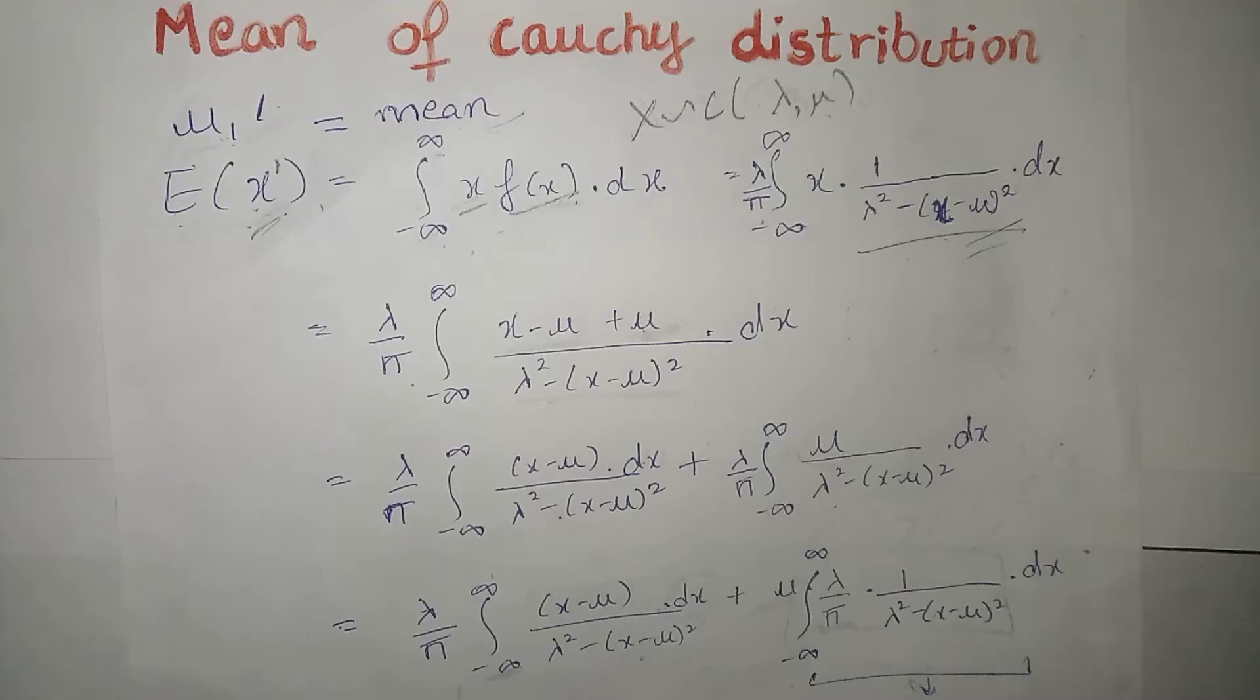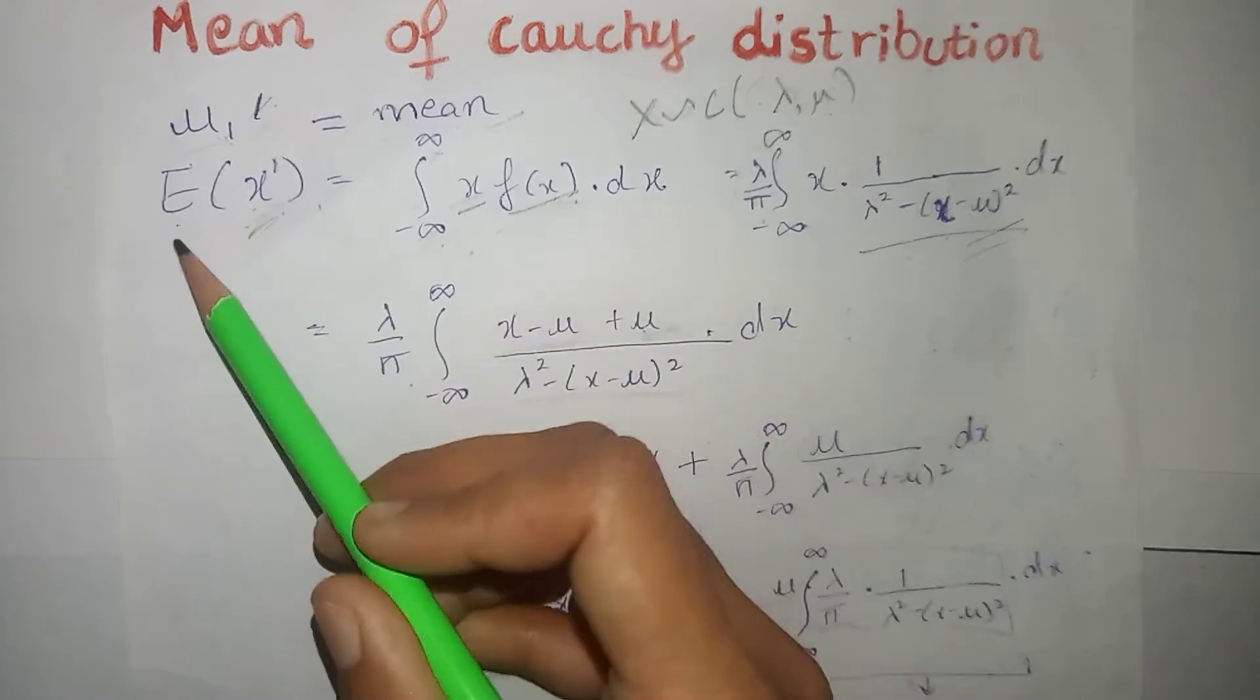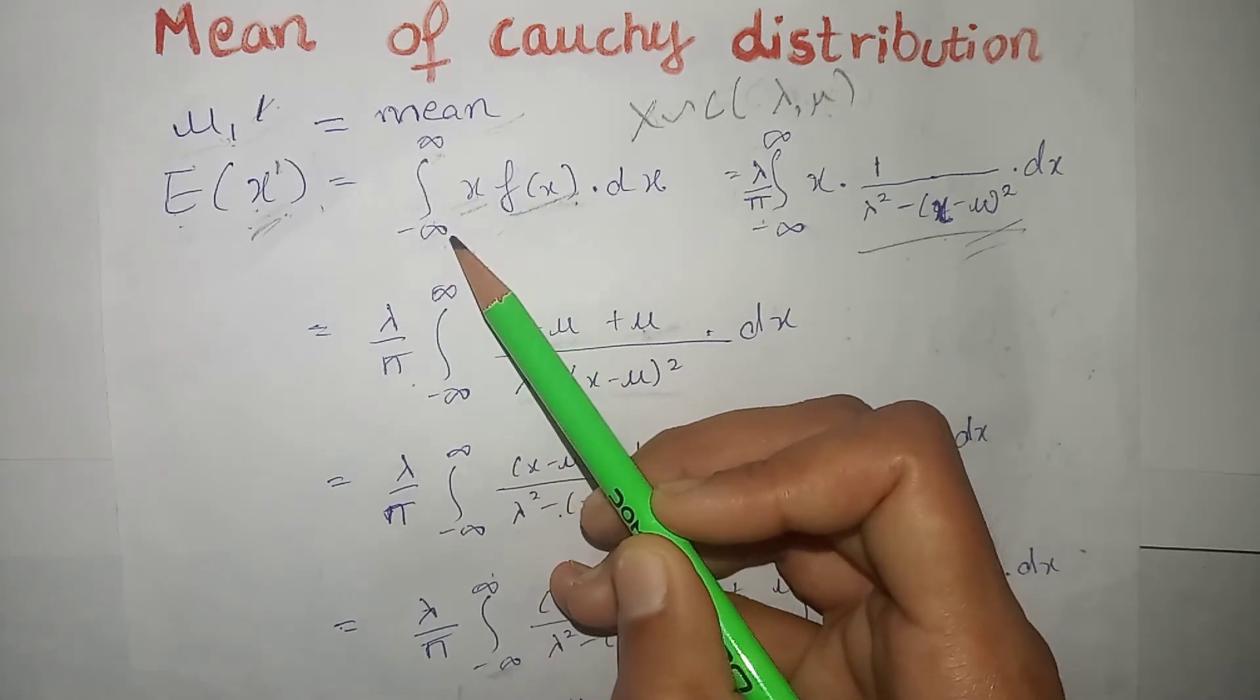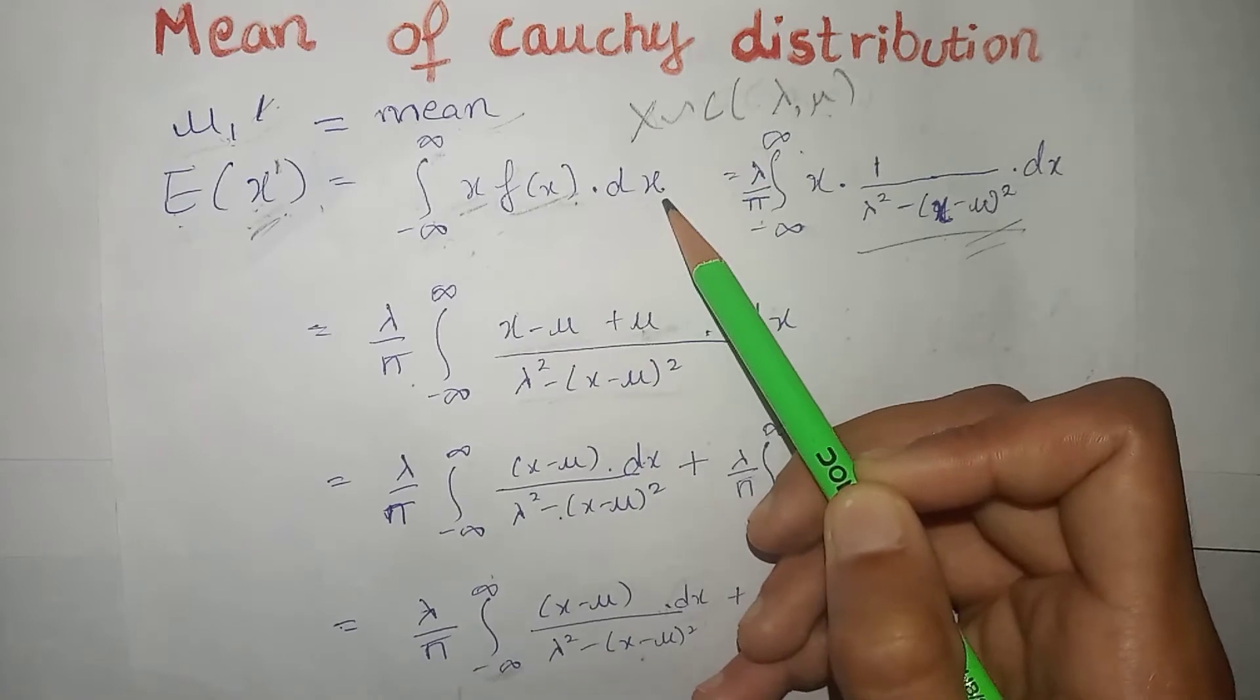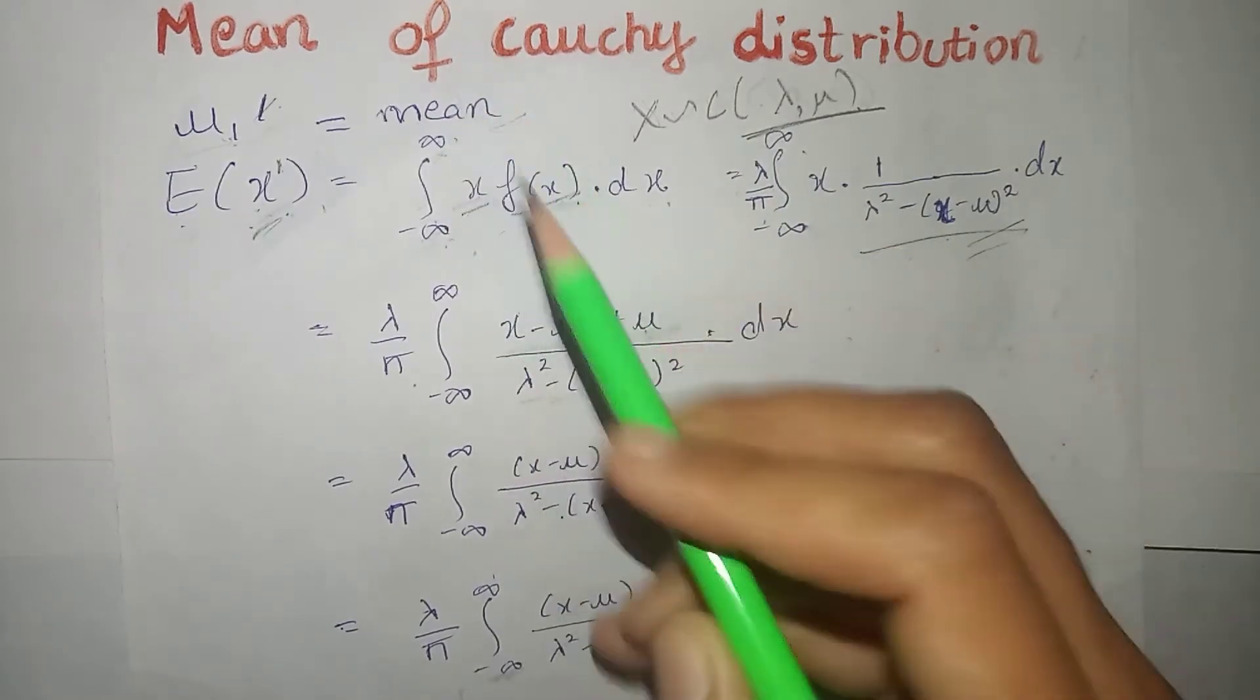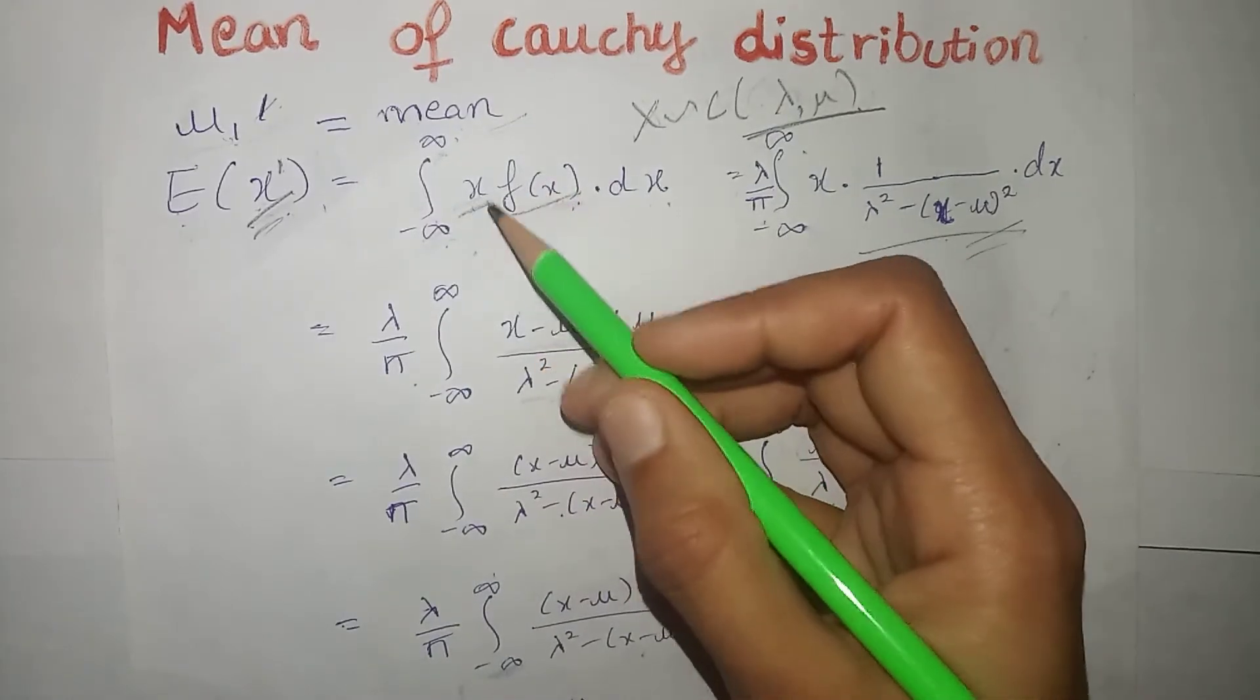First of all, we will find out mean of Cauchy distribution, then we will find out variance of Cauchy distribution. So we know that mean equals first moment about origin, which equals expectation of x to power 1. And expectation ki definition, that is integration over the old range of x. That is, Cauchy distribution mein, humara jo x variable hota hai, jo Cauchy distribution ko belong karta hai with the parameters lambda and mu. Us ki range hoti hai minus infinity to infinity. Just term ki aap expectation call kar rahe hai, saath mein pdf of x variable.